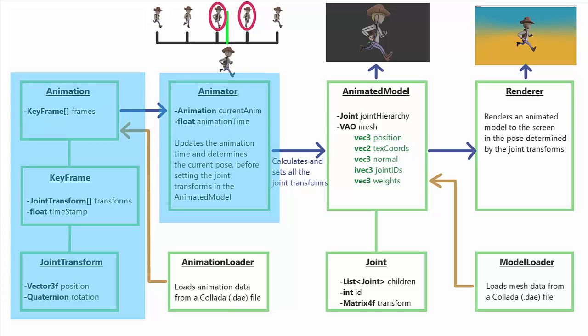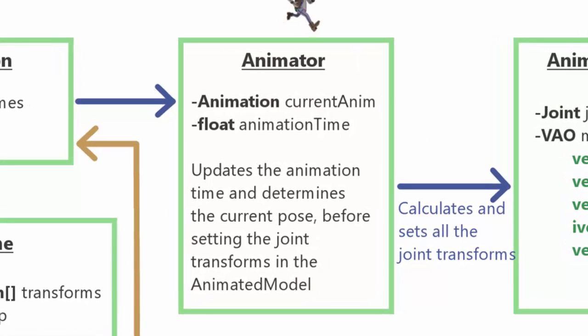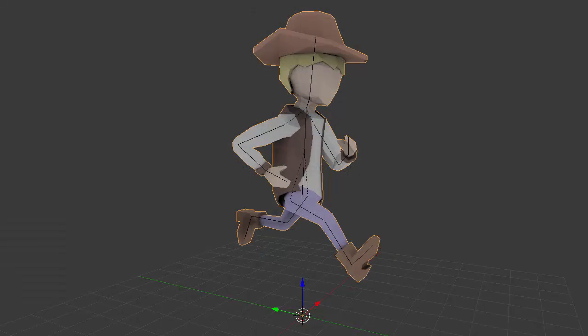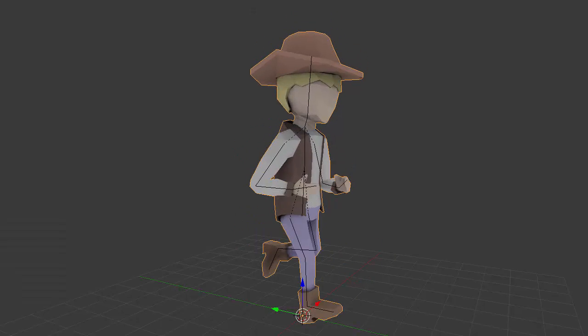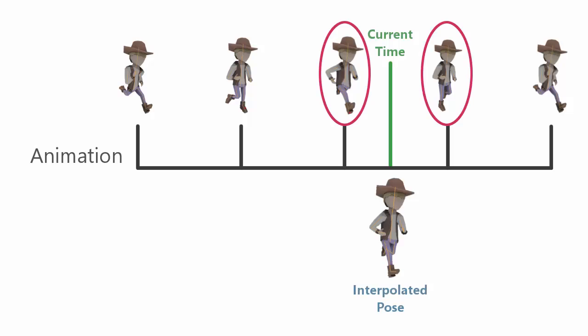Hopefully you remember from the first episode that an animation is just a series of keyframes, and a keyframe is a certain pose at a certain time of the animation. The animator's job is to keep track of the current animation time, which it increases every frame so that the animation keeps progressing, and each frame it also has to calculate the current pose of the model by interpolating between the poses at the previous and next keyframe.